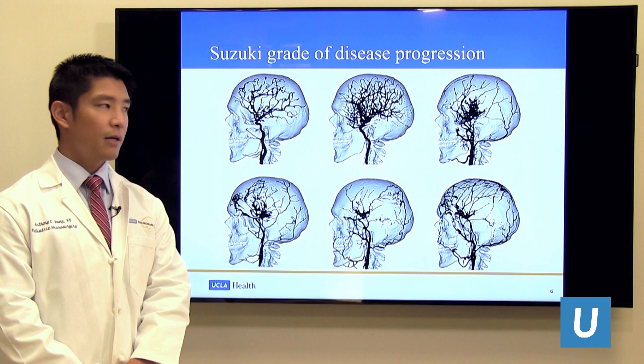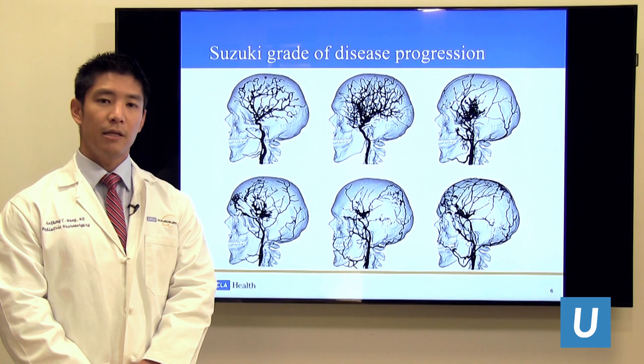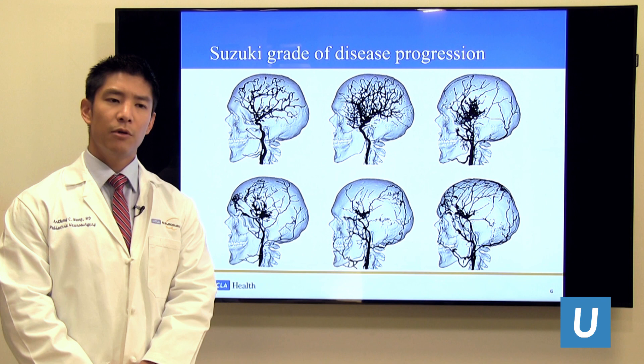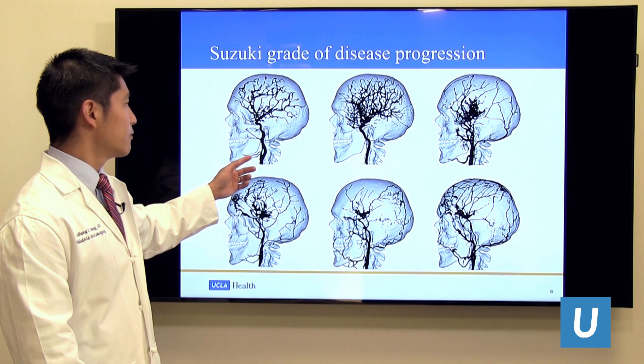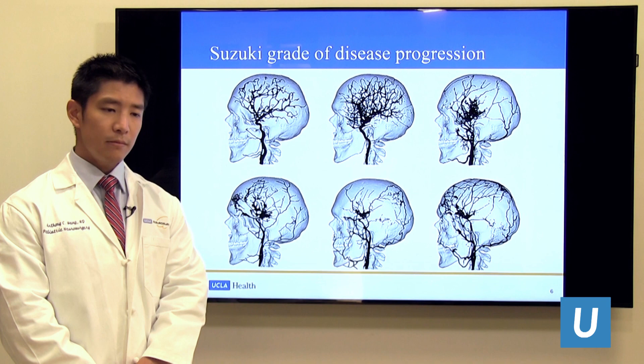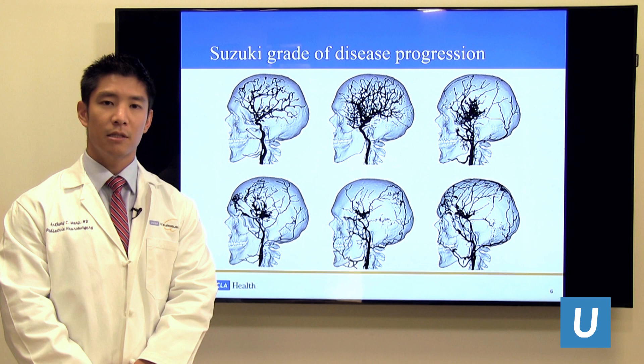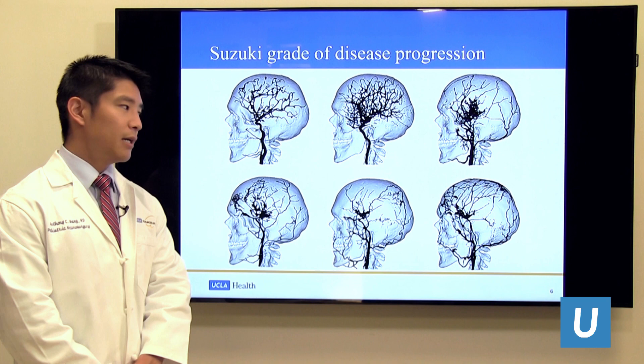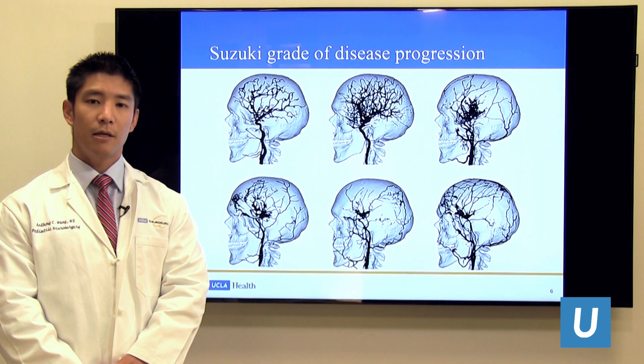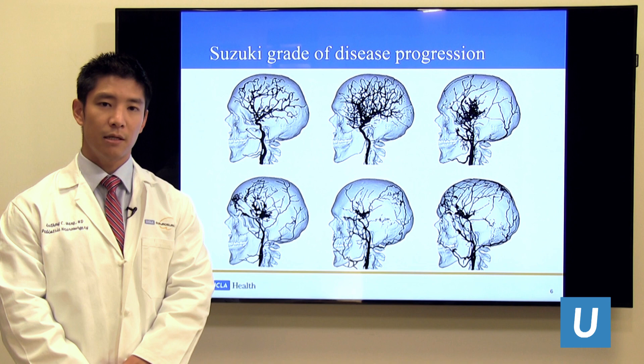Moyamoya is graded based on the Suzuki grade in terms of six levels of severity. Moyamoya disease is, by definition, progressive. It goes from grade one, where you start to see collapse of some of the vessels, to grade two, when you start to see collateral vessels forming in response to stenosis of the main arterial branches, all the way out to grade six, where the primary contributors to brain circulation are completely collapsed and the brain is entirely dependent on collaterals from other sources.